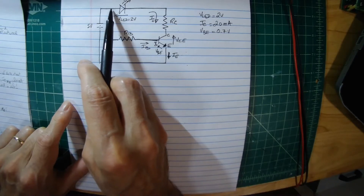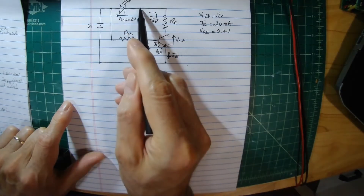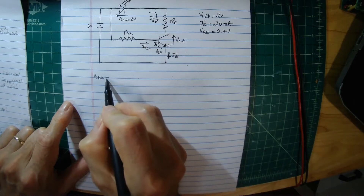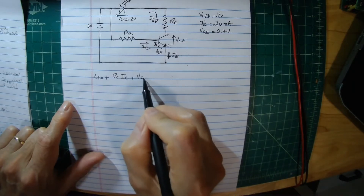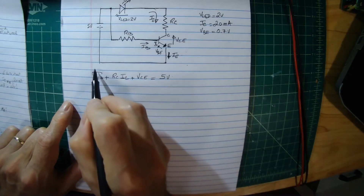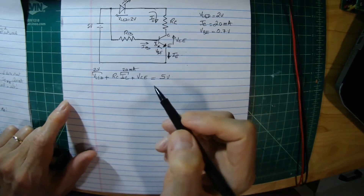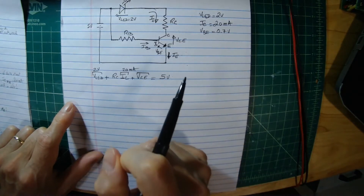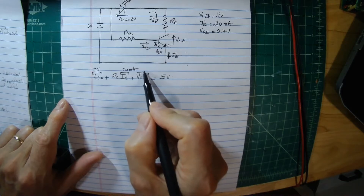Let's write down the voltage equation for the collector leg from top to bottom: V_LED plus Rc·Ic plus V_CE equals 5 volts. We already know V_LED is 2 volts and Ic is 20 milliamps. And V_CE — when you use a transistor as a switching device, V_CE is 0 volts in saturation.